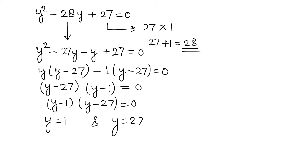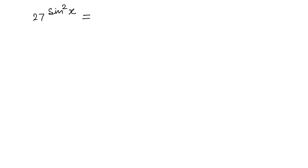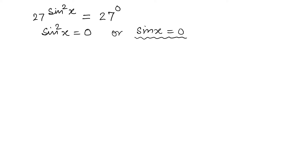Starting with y = 1: since y = 27^(sin²x), we have 27^(sin²x) = 1 = 27^0, so sin²x = 0, meaning sin x = 0. The general solution for this trigonometric equation is x = nπ.